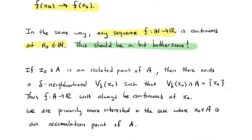At an isolated point, by the limit definition the function is automatically continuous. In the neighborhood version: if x₀ is isolated, there's some delta neighborhood where the only element of A is x₀ itself. So any x in A within delta of x₀ must equal x₀, making the function trivially continuous. Continuity at isolated points is not a particularly interesting subject — the interesting cases are at accumulation points.